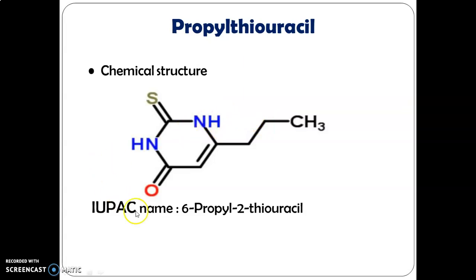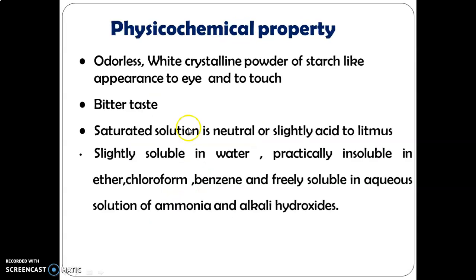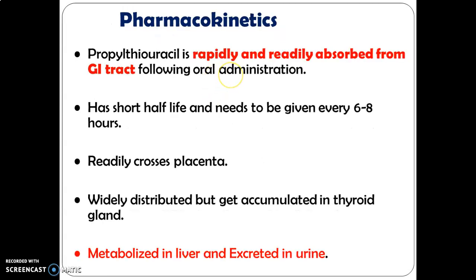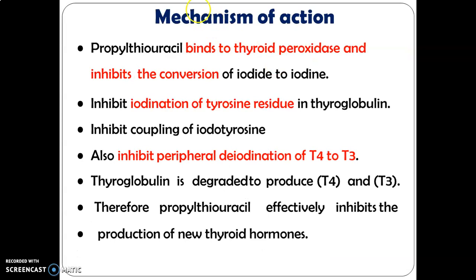Propylthiouracil (PTU): the chemical structure is 6-propyl-2-thiouracil. Physicochemical properties: it is an odorless white crystalline powder, slightly bitter; a saturated solution is neutral or slightly acidic to litmus; slightly soluble in water, practically insoluble in ether, chloroform, and benzene; freely soluble in solutions of ammonia and alkali hydroxides. Pharmacokinetically, it is rapidly and readily absorbed from the GI tract, readily crosses the placenta, widely distributed, and accumulates in the thyroid gland. It is metabolized in the liver and excreted in urine.